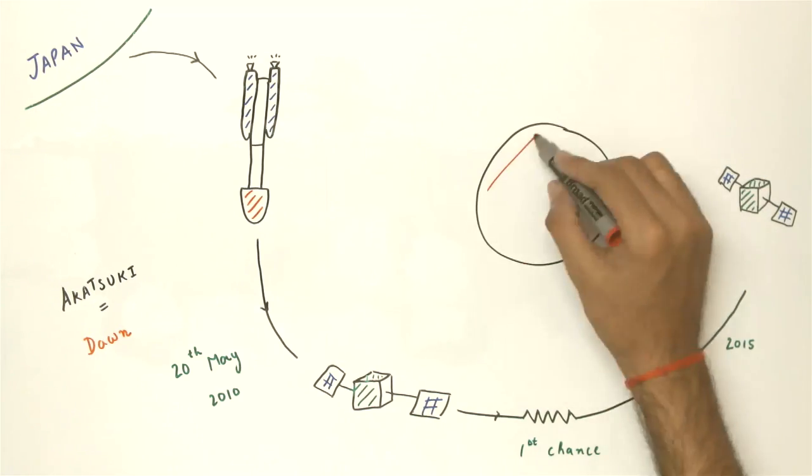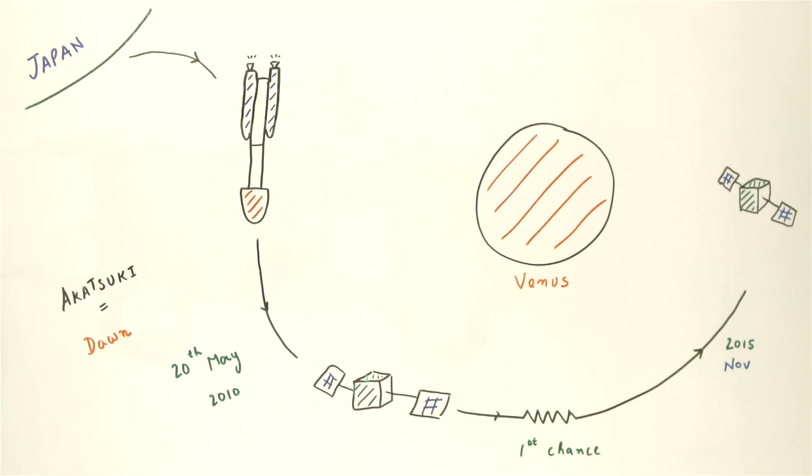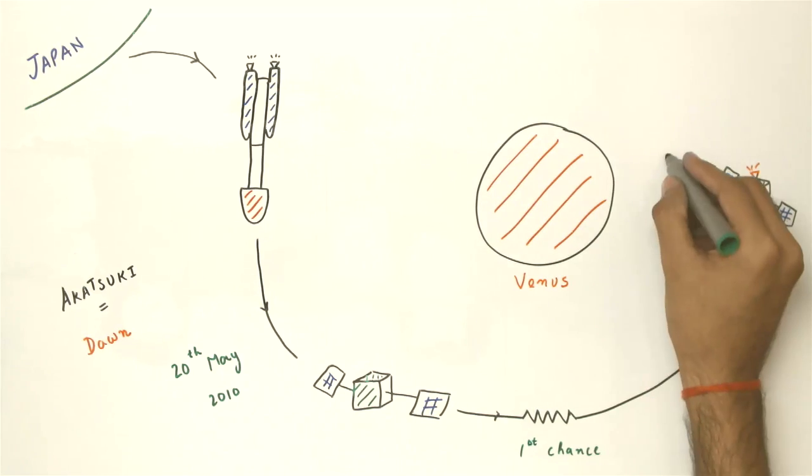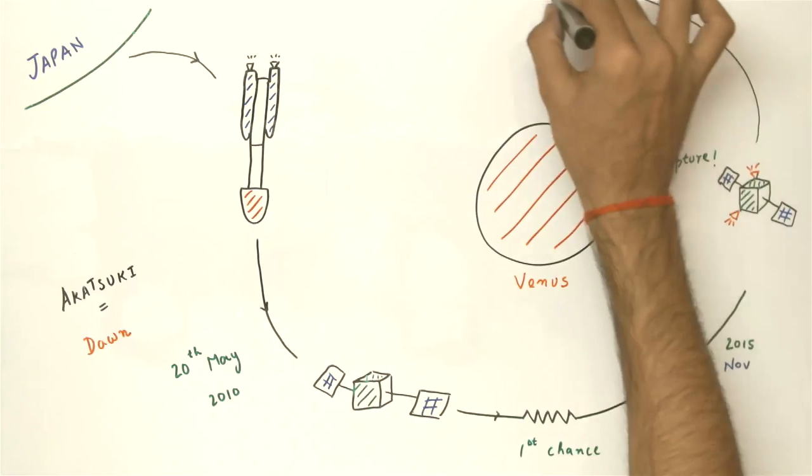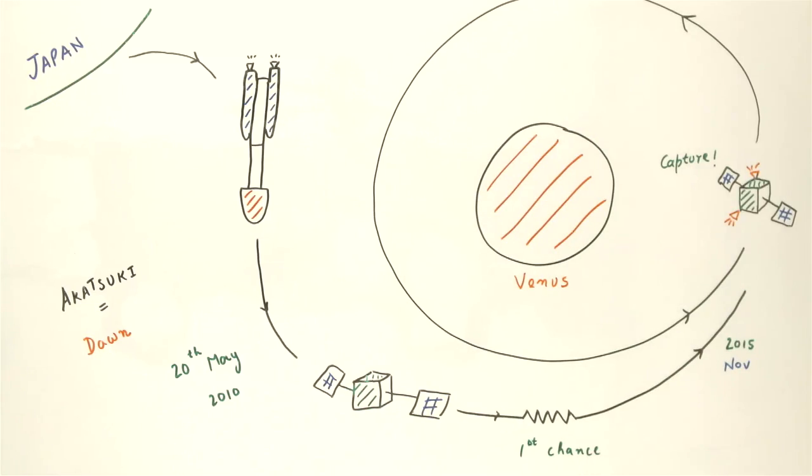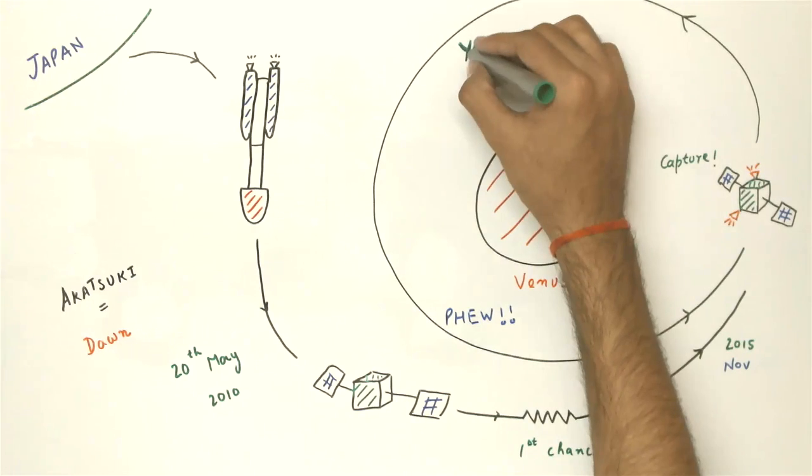It should fly close to Venus again sometime in November this year. Scientists plan to use its orientation control thrusters, which are small engines of a sort, to insert the probe into an alien orbit, this one farther than the one originally planned. If this succeeds, the craft shall still be able to complete most of its objectives. So let's keep our fingers crossed and wait.